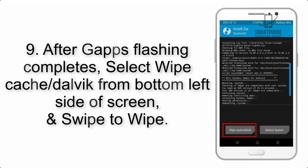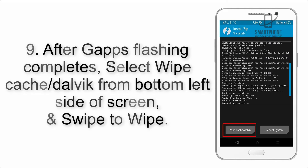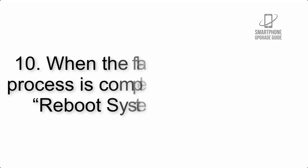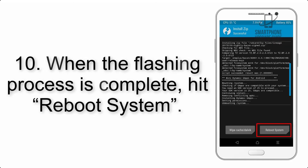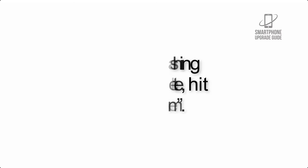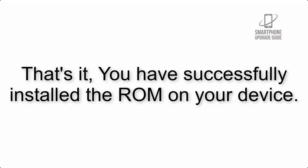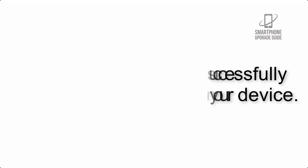Step 9: After GApps flashing completes, select Wipe Cache and Dalvik from the bottom left side of the screen and swipe to wipe. Step 10: When the flashing process is complete, hit Reboot System. That's it — you have successfully installed the ROM on your device.